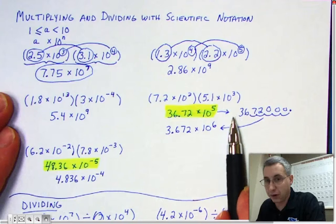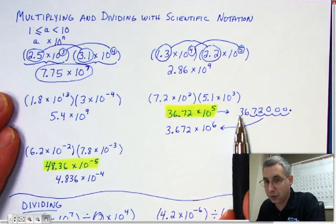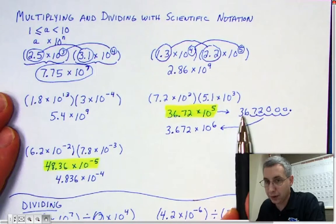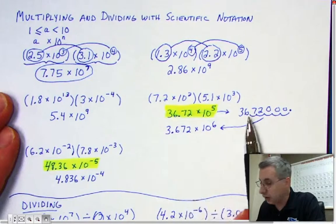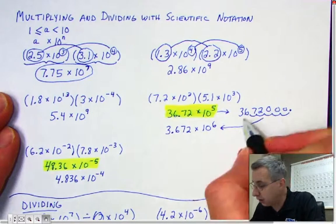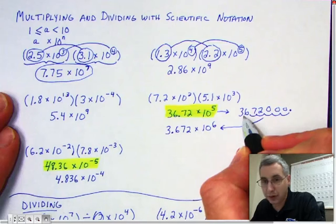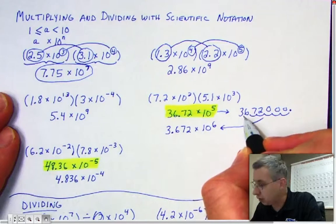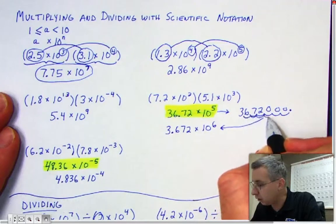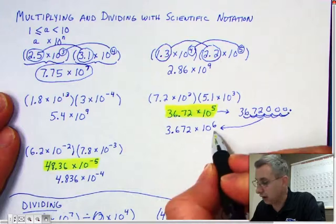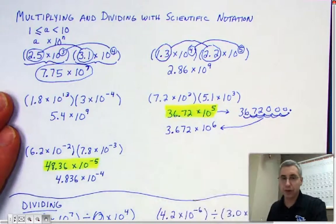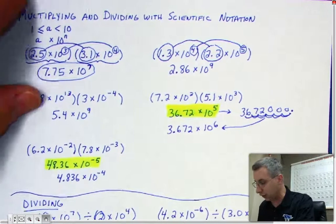Start at the left and scan across until you pass only one digit that's not zero. Stop right there — 3.672. Write that down. Now starting right here between the 3 and the 6, count how many places you have to go over: 1, 2, 3, 4, 5, 6. So your answer is confirmed: it should be 3.672 times 10 to the 6th.